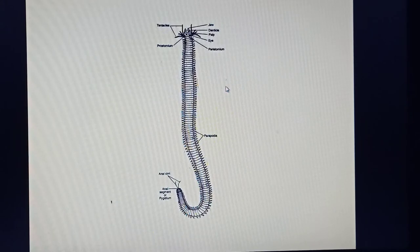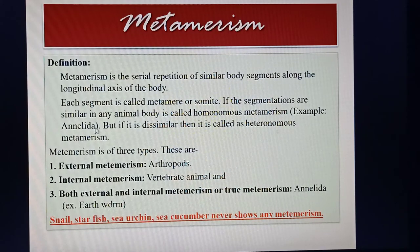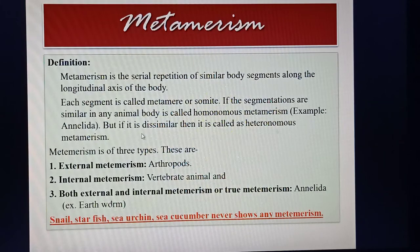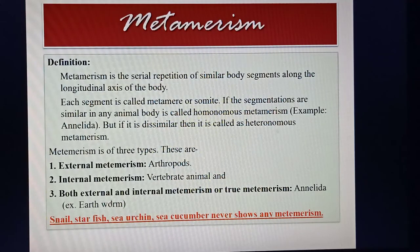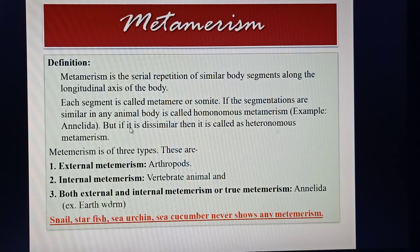The segments may be equal or not. If the segmentations are similar in any animal body, it is called homonomous metamerism — for example, the segments in animals belonging to phylum Annelida. If the segments are dissimilar, it is called heteronomous metamerism — for example, in the case of shrimp, where some segments are large and some are small in size.